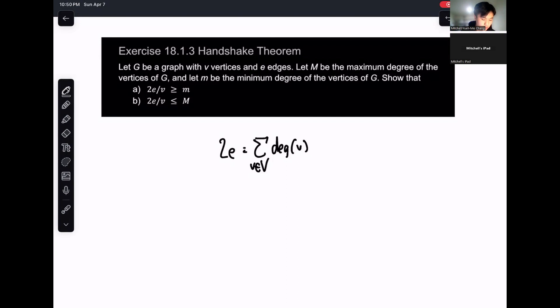What we want to show is that this term, 2E divided by V, is both greater than or equal to the minimum and also less than or equal to the maximum.